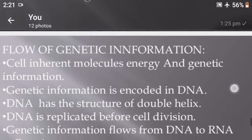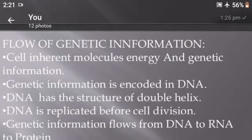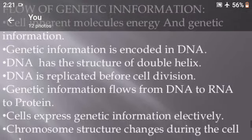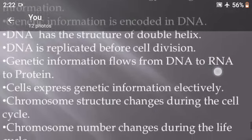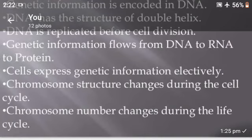The flow of genetic information: the main function of chromosomes is that cells inherit molecules, energy, and genetic information. Genetic information is encoded in DNA. DNA has the structure of a double helix. DNA is replicated before cell division, and genetic information flows from DNA to RNA to protein. Cells express genetic information selectively. Chromosome structure changes during the cell cycle, and chromosome number changes during the life cycle.